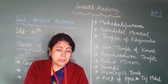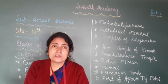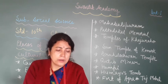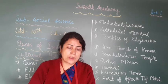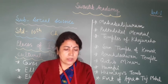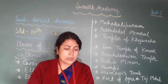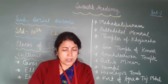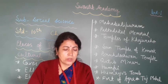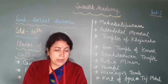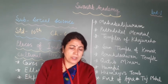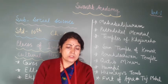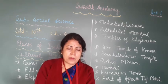Pattadakal is the capital of Chalukya dynasty, 60 km away from Badami. There is a distinct style of architecture used in the construction of the temples here. These were built during the 7th and 8th century. The main temple of Pattadakal is the biggest temple, built in a three-style architecture.